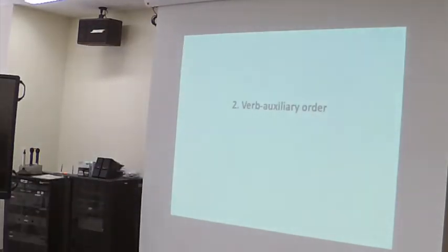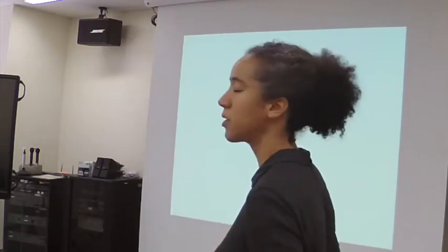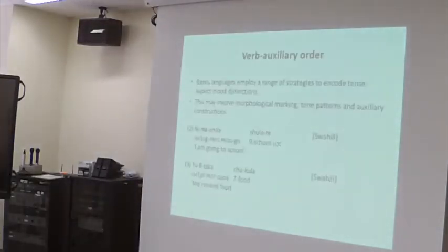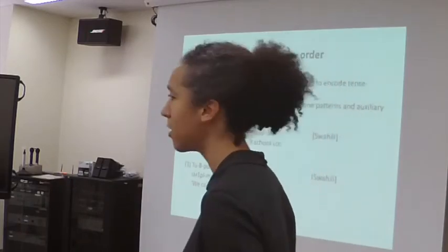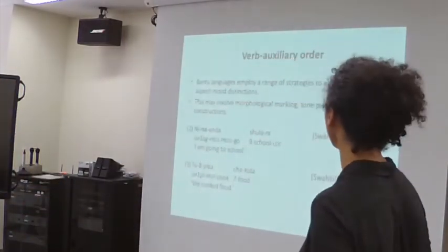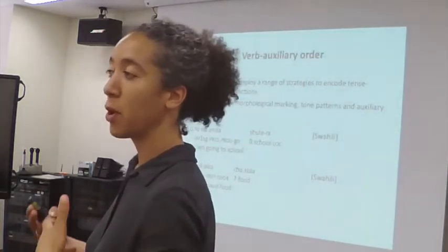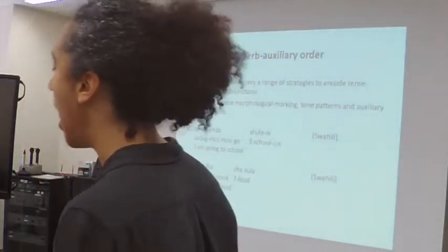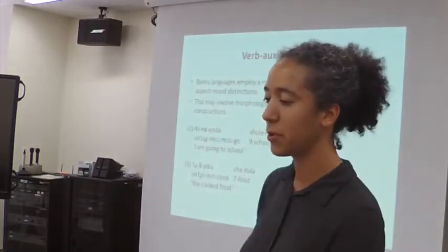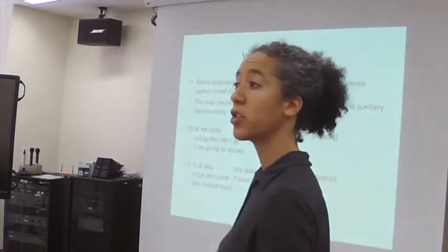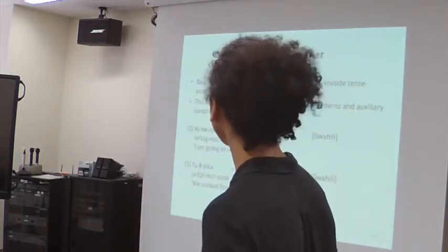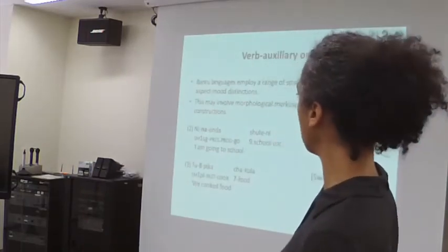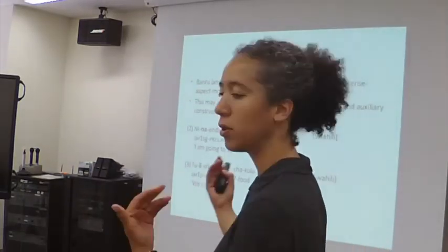Bantu languages employ a variety of different strategies for marking tense and aspect — morphological marking, tone, and auxiliary constructions, which are another way of encoding a wider variety of tense-aspect distinctions. These Swahili examples show a simple form with a single verb form and markers showing present progressive or past tense. And then you have an auxiliary construction.